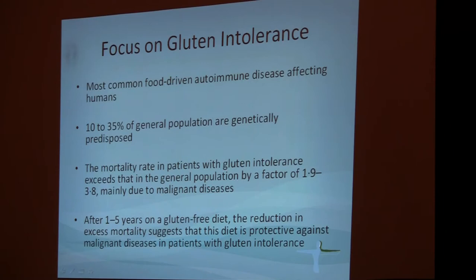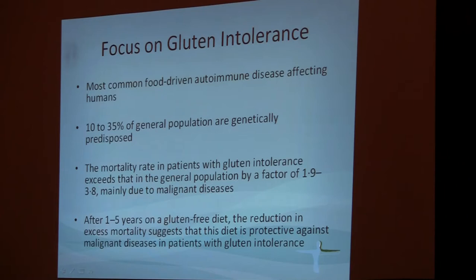This elevated mortality is mainly because of malignancies — mainly lymphomas and colon cancer. What's been shown is that if you start a gluten-free diet and stay on a pretty strict gluten-free diet somewhere between one to five years, your chance of getting malignancies goes down to the regular baseline level. There are quite a few studies reflecting this statement.